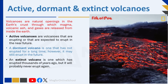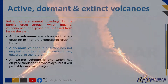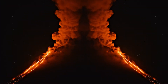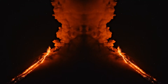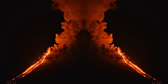A dormant volcano is one that has not erupted for a long time, however it may still erupt in the future. An extinct volcano is one which has erupted thousands of years ago but will probably never erupt again.